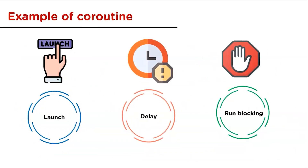Before looking at an example, let's understand some key coroutine terms: launch, delay, and runBlocking. Launch is a coroutine builder — it launches a new coroutine concurrently without blocking the current thread. It is automatically cancelled when the resulting job is cancelled, and it doesn't return any result.